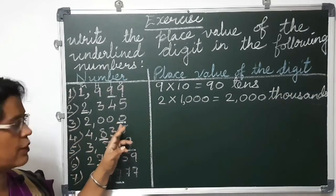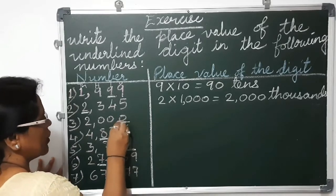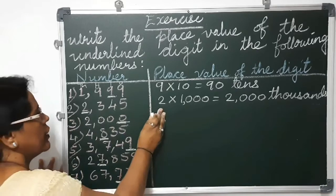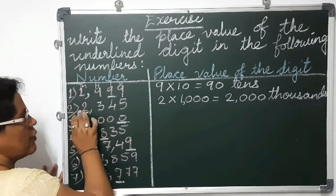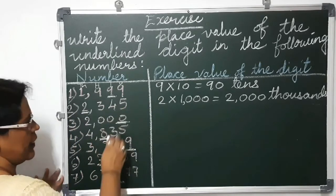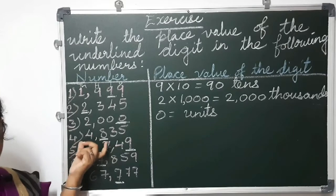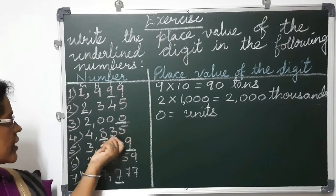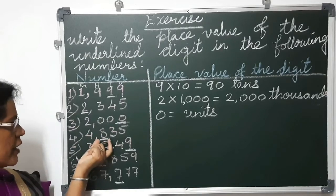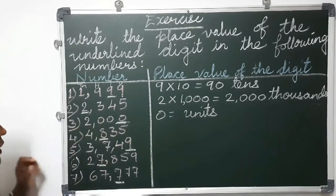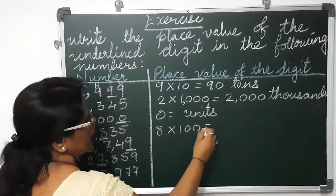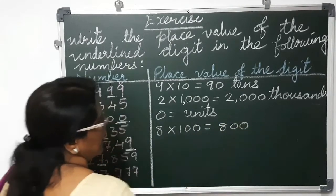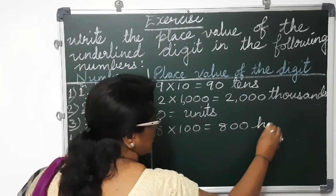Now here the underlined digit is 0 — units place value. The fourth number is also a four digit number: units, tens, hundreds and thousands. The underlined digit here is 8. So 8 is in hundreds place value. 8 into 100 equals 800, and 800 is in hundreds place value.